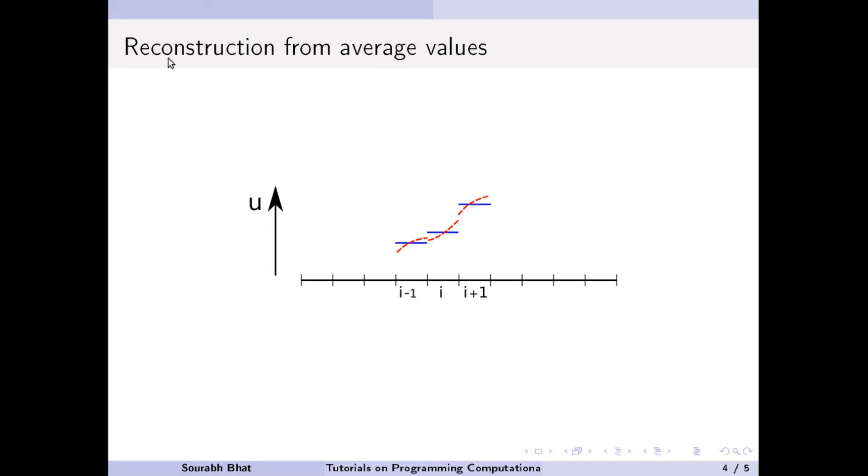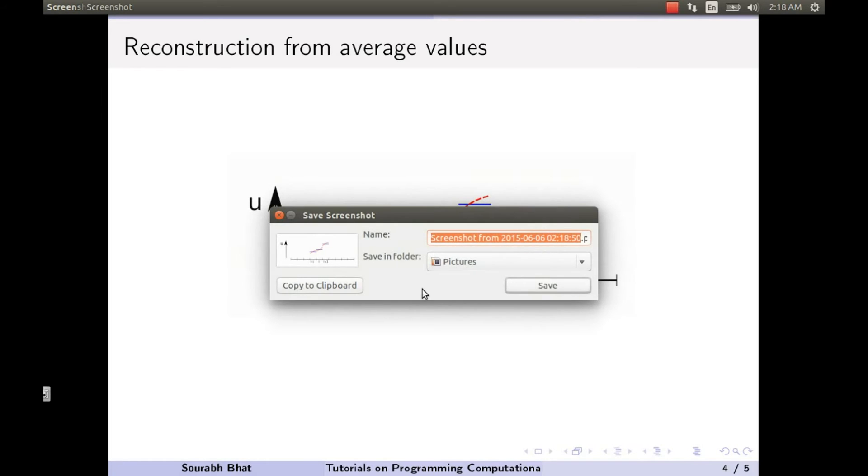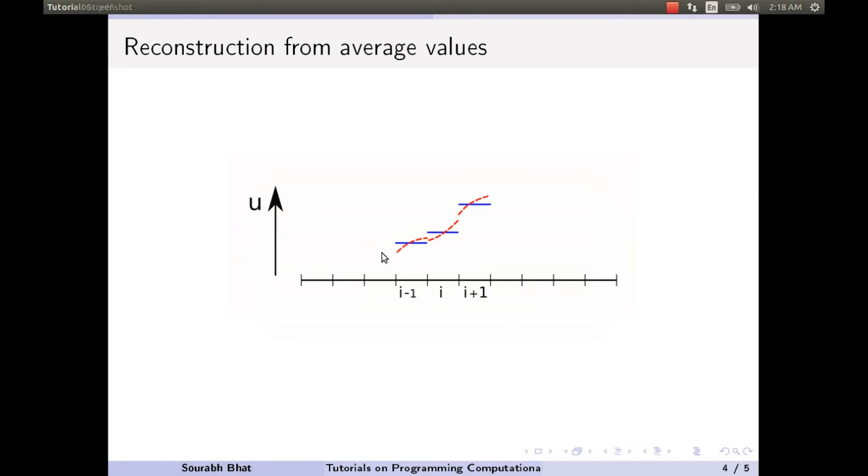Once we know these values, this function, the red function, we can then find out the values at the interface. Well, when I say values at the interface, you can see here there are two values: left value and right value. Let me try to quickly show you that.